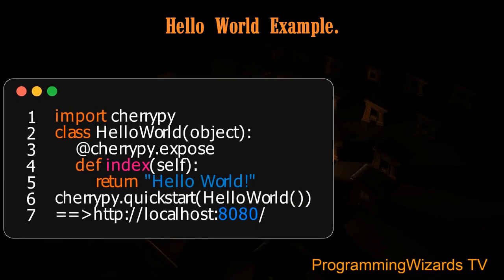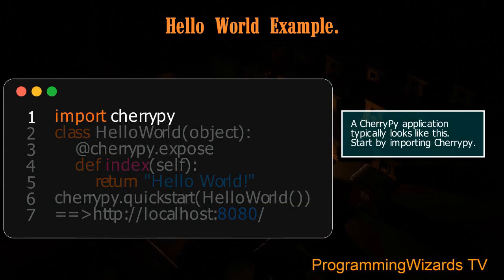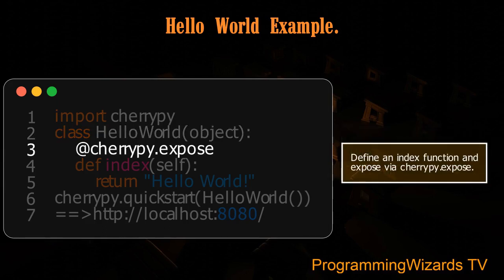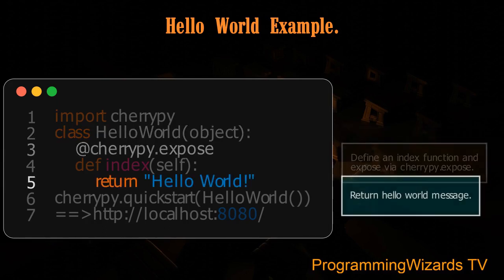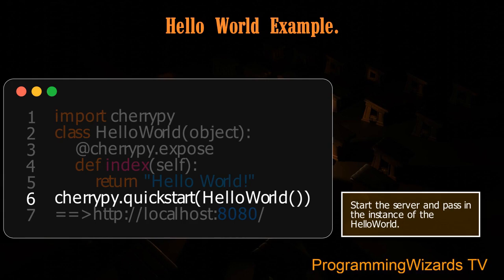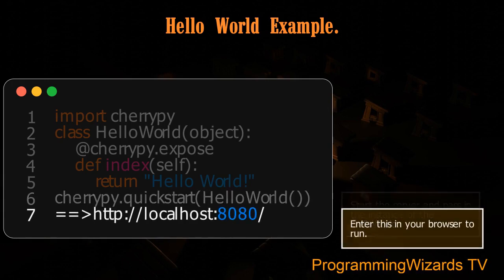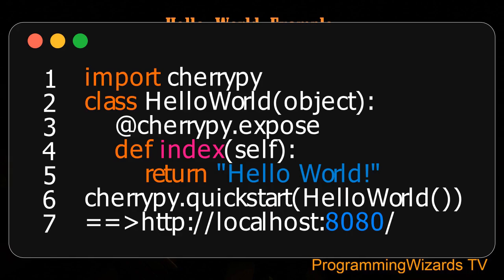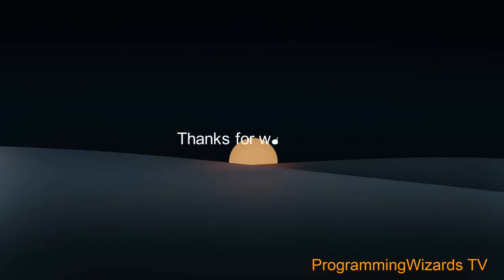A CherryPy application typically looks like this: Start by importing CherryPy. Create a class extending an object. Define an index function and expose it via cherrypy.expose. Return a Hello World message. Start the server and pass in the instance of the HelloWorld class.